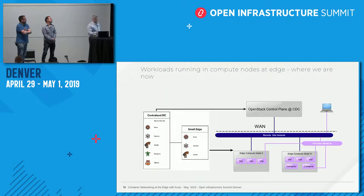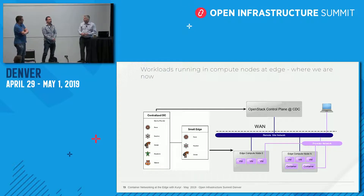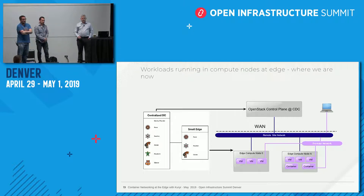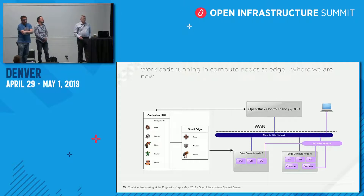The only backhaul is getting the image from Glance — that's the one thing we don't have the ability to cache at the site, so that is one place some backhaul is involved.